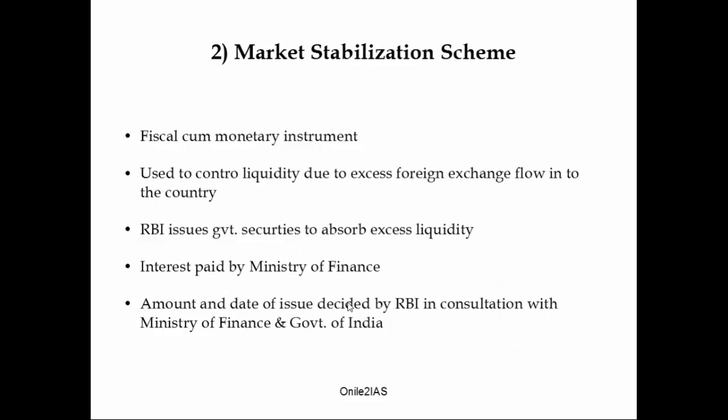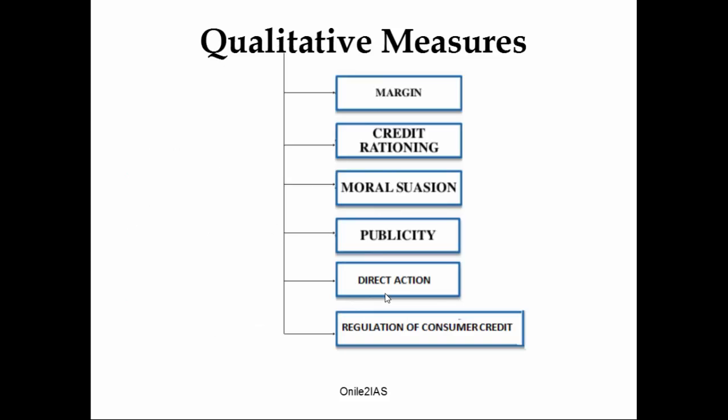The next measure under non-conventional measures is market stabilization scheme. This is a fiscal-monetary instrument usually used to control liquidity due to excess foreign exchange flow. RBI issues government securities to absorb excess liquidity in the economy, and the interest for these securities is paid by the Ministry of Finance. The amount and date of issue of these securities is decided by RBI in consultation with the Ministry of Finance and Government of India.